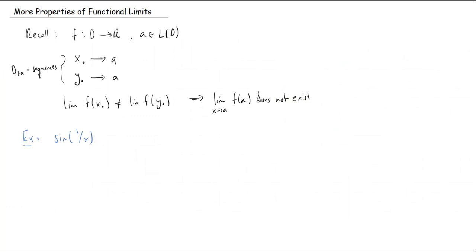OK. So the divergence criterion suggests that if we can find two sequences that converge to the same point, and in this case, my A is going to be zero. All right, so we're going to find X dot converging to zero and Y dot converging to zero,